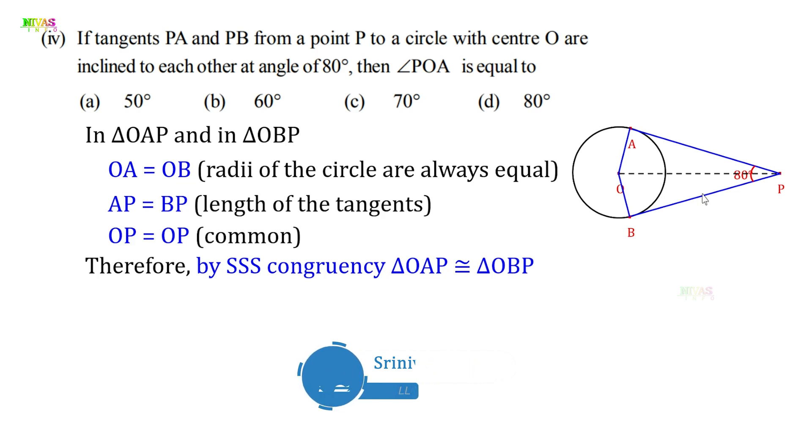OP is equal to OP, which is the common side. Therefore, by SSS congruency, triangle OAP is congruent to triangle OBP. Since the two triangles are congruent and this angle and this angle are common, we can write that the angles are similar.